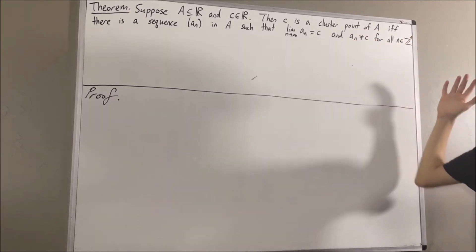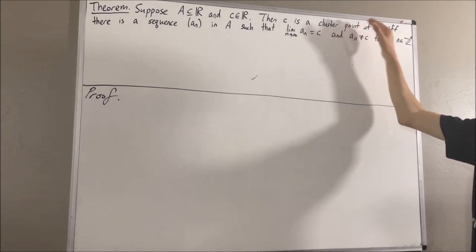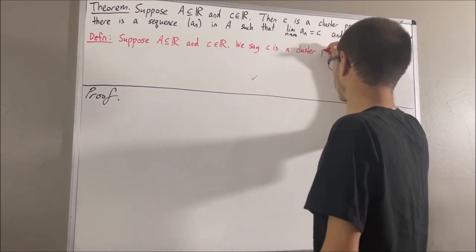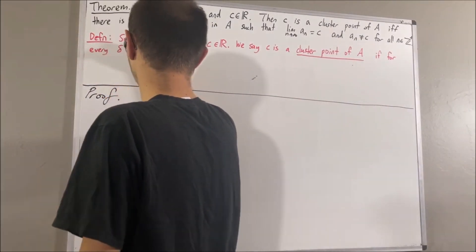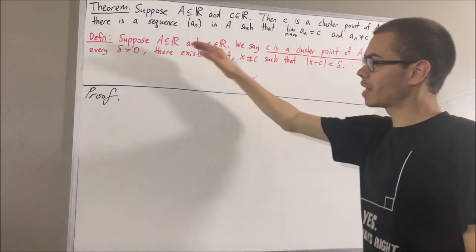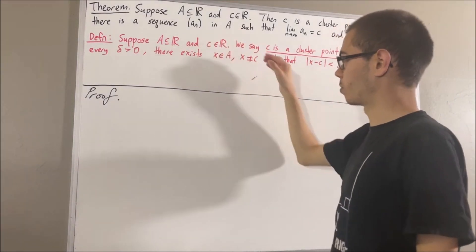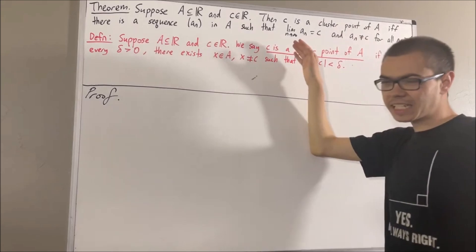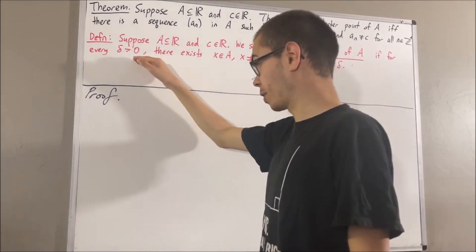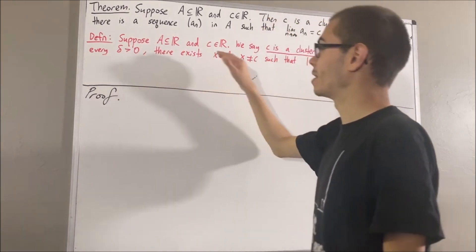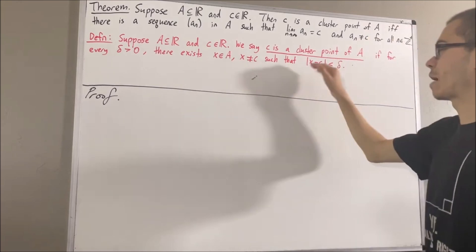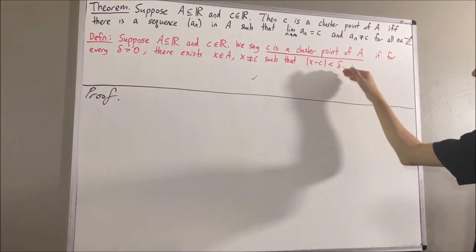Now to start, our definition of a cluster point is as follows. Suppose A is a subset of real numbers and C is a real number. We say C is a cluster point of A if for every delta greater than 0, there exists an element x in A distinct from C such that the absolute value of x minus C is less than delta.